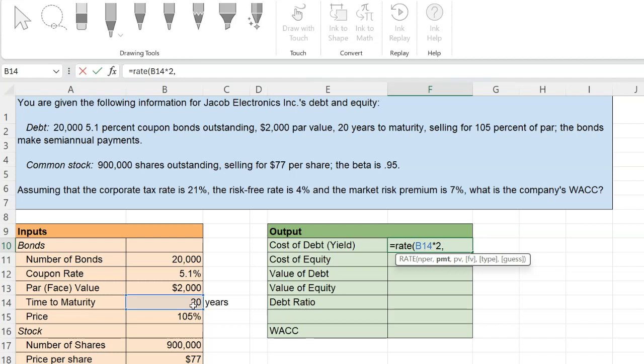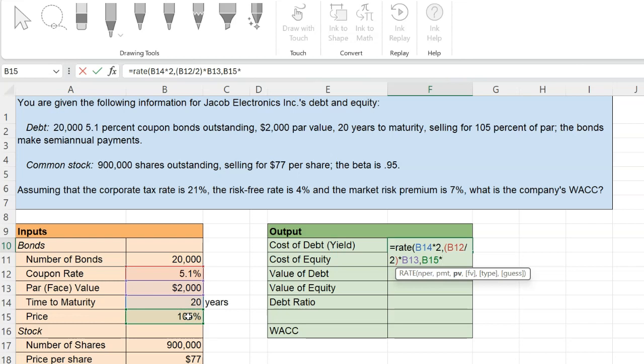The payment is the coupon payment that you're going to be receiving. And again, because it's semi-annual, I'm going to do 5.1% divided by two, and then I'm going to multiply that by my face value. Next is present value. Present value is the price of the bond today. That is what you will need to pay to purchase the bond today. And we are told that that number is 105% of par value. So I'm going to do 105% times the par value. Now over here, I'm going to make sure that I do times negative par value. Why? Because I want this number to be a negative. Why?